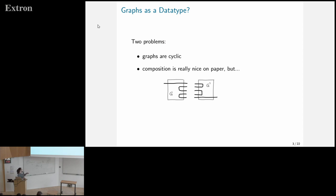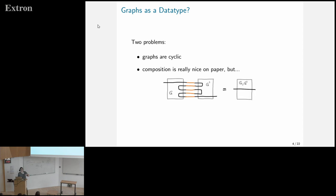Composition is super nice on paper, but it's not very nice to implement. For example, if I want to compose these sequentially, then on paper I just connect all the edges and we get one edge at the end. But this is really difficult to do because you need to track forwards and back all the time — it's not so nice.